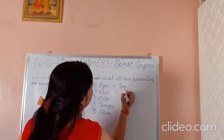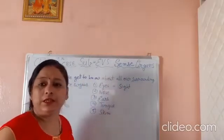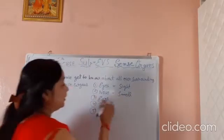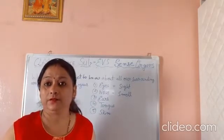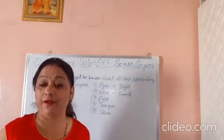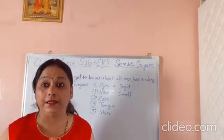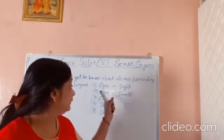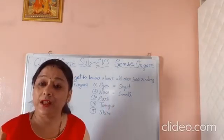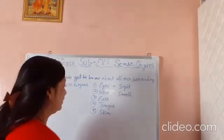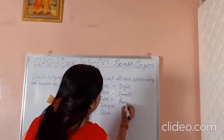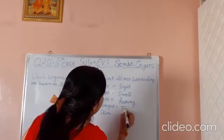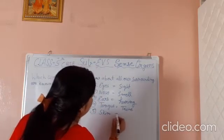Eyes help us to see. Nose helps us to smell — things found in our surroundings like flowers and food items. Ears help us with hearing. Tongue helps us taste. And skin helps us with touch.